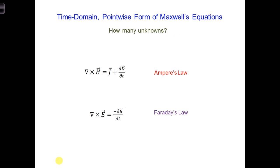For the moment, let's examine more closely the time domain point-wise form of Maxwell's equations. What are our unknowns in these two equations?